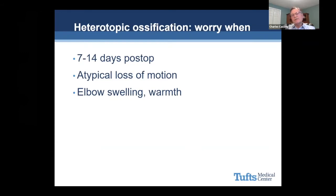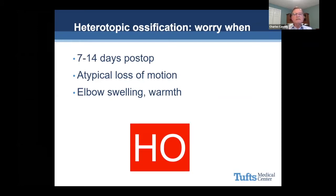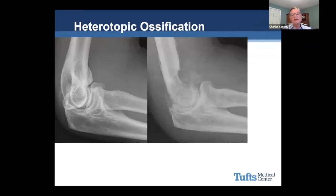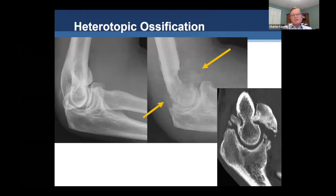Number six: heterotopic ossification. Elbows are prone to develop HO after injury. It's important to worry when a patient looks good right after surgery, but seven to fourteen days afterwards their elbow looks more swollen, it's warmer, and they've lost some motion they had gained. Here's an example of a patient treated arthroscopically — all the stuff in the front and back of the elbow was addressed, and the patient was doing well for a little while. But you can see a cloud of bone developing, which unfortunately progressed and derailed the rehab, ultimately requiring HO resection.